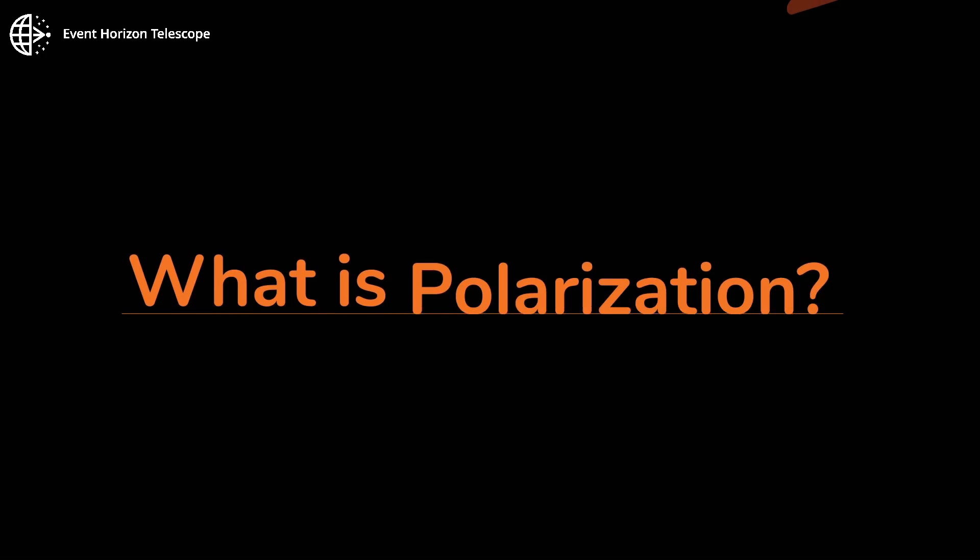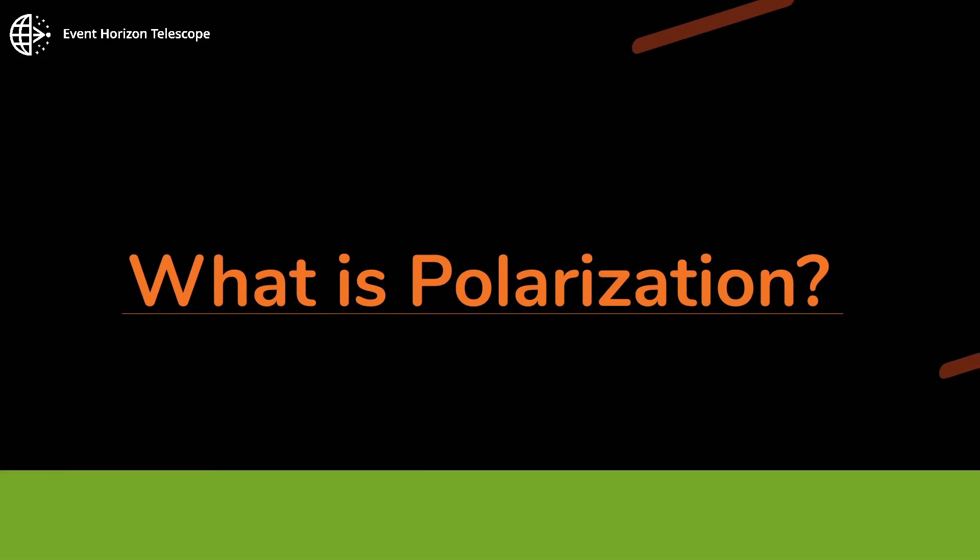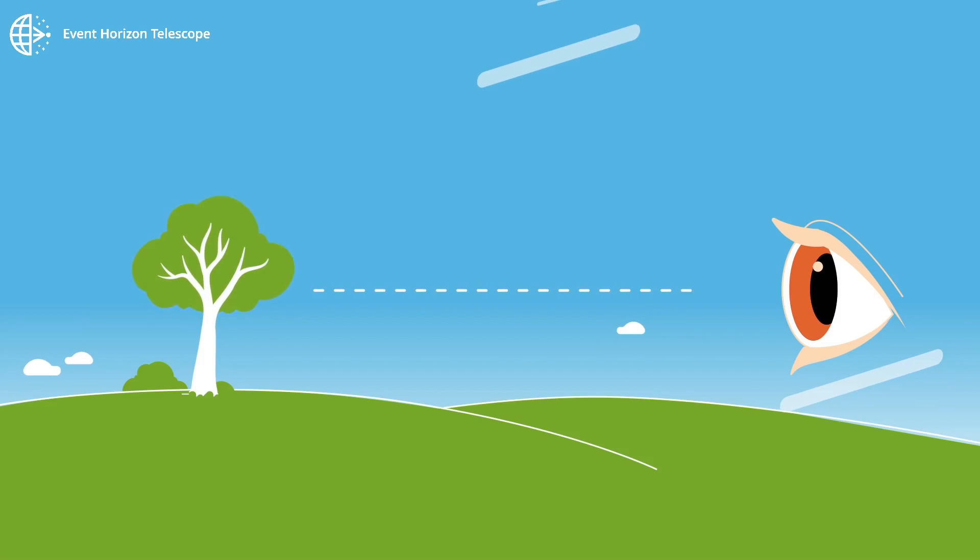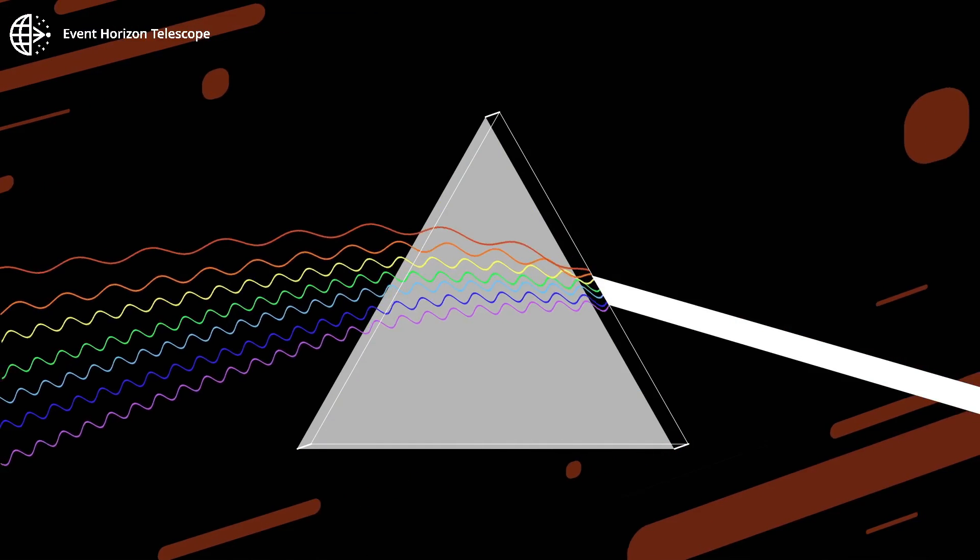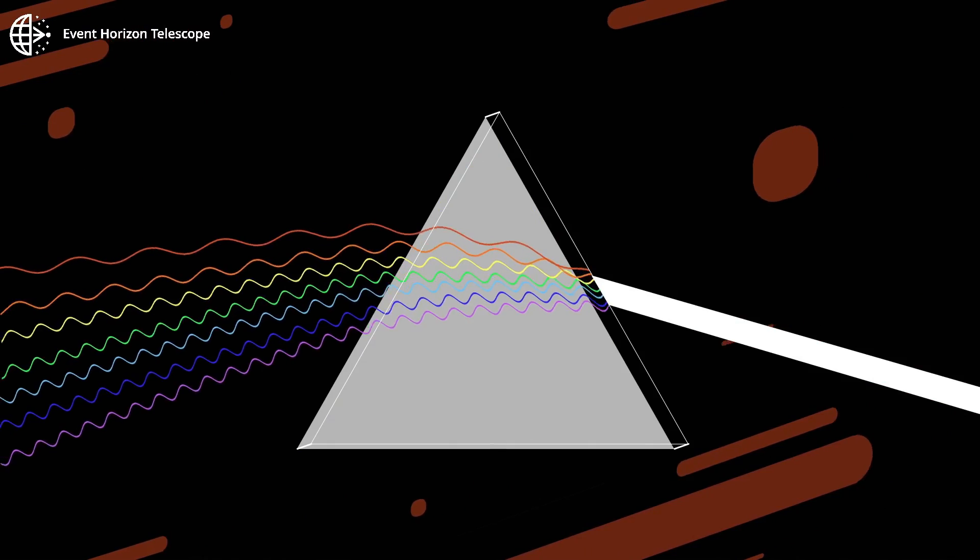What is polarization? Light bouncing off objects allows us to see them. Light is an oscillating electromagnetic wave. We see different frequencies of that oscillation as different colors.